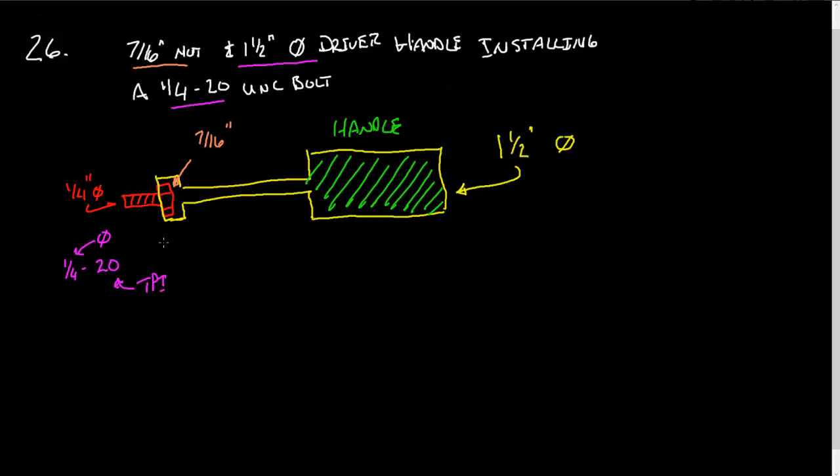So those are two important things when you're doing your drawing. So I've drawn this out, rough sketch. I've shown that the 7/16ths head is attached to the handle. The handle's an inch and a half in diameter. So that's the first problem.